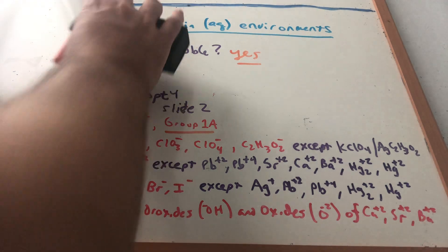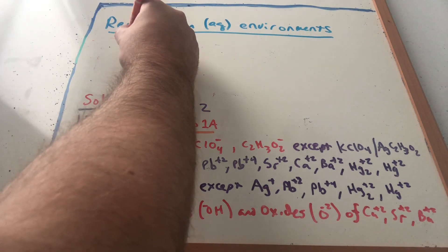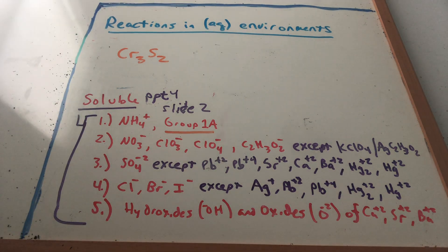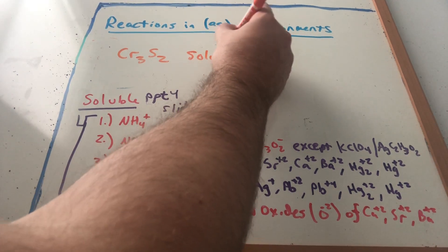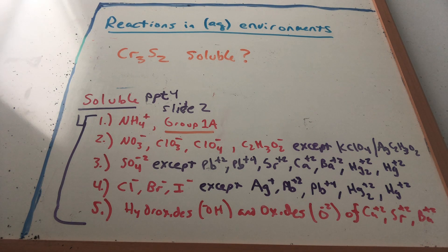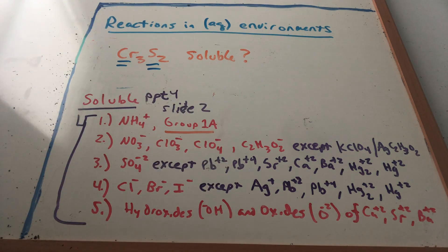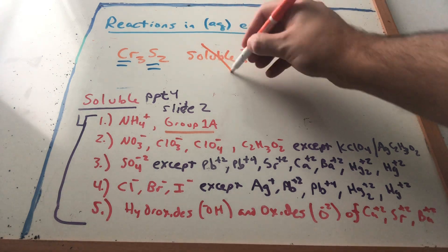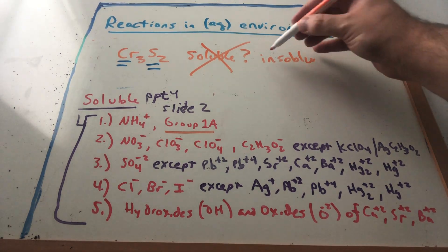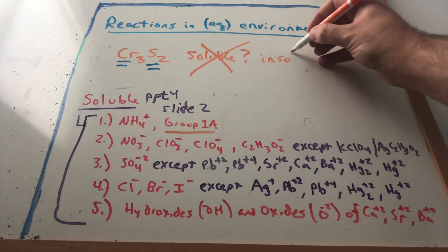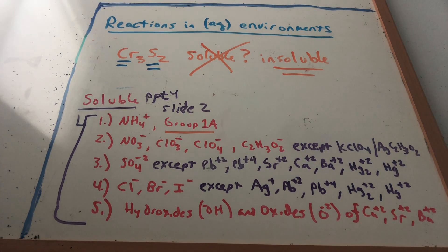What if I look at chromium(II) sulfide? I look for each ion on the chart — do I see chromium anywhere? No. Do I see S anywhere? No. If it doesn't fit the chart, then we know it's insoluble. It's an insoluble salt and we expect it to be a solid. When we try to put it into an aqueous environment, it doesn't dissolve enough for us to not call it a solid.